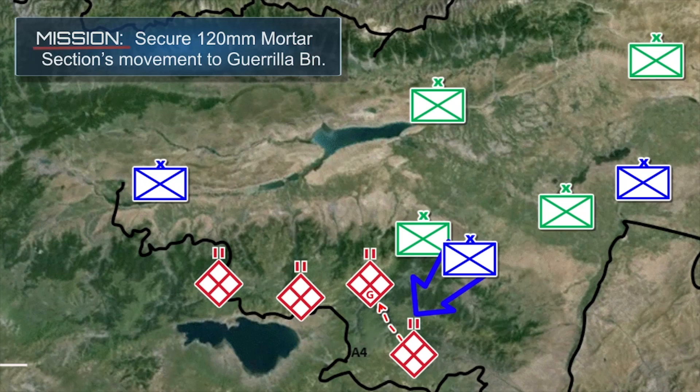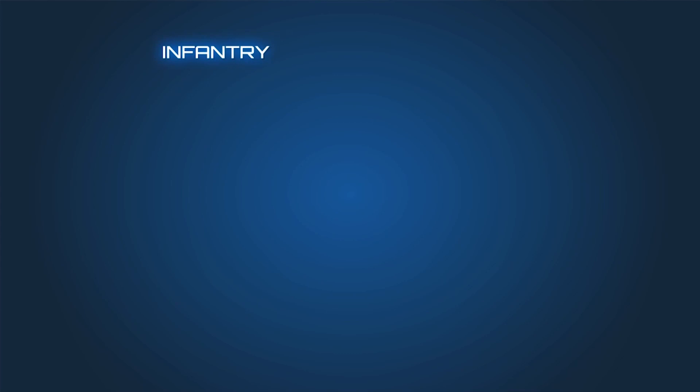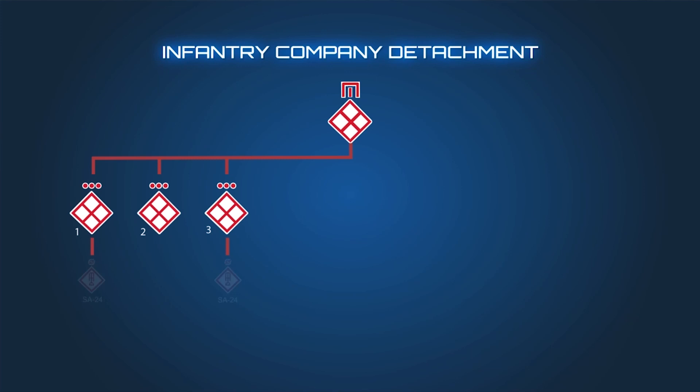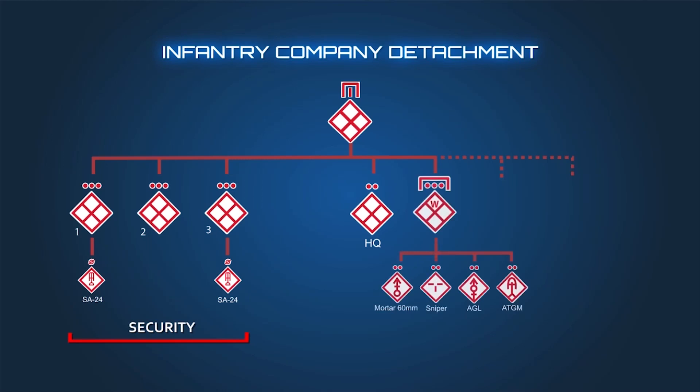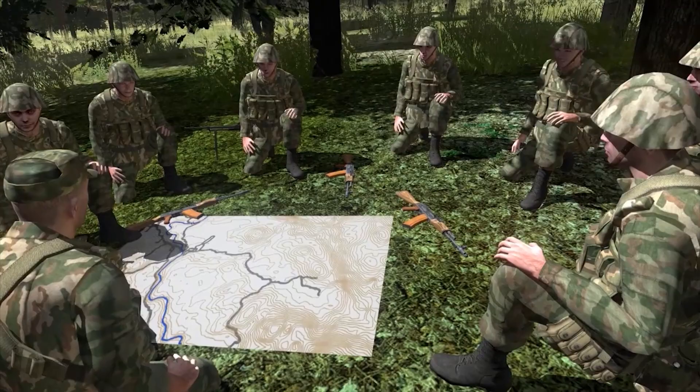Our company detachment will move along this planned route. To accomplish our mission, we will task-organize for tactical movement. The flank infantry platoons each have a dedicated SA-24 for aerial protection. The command team, the weapons platoon, the UAV, and the 120mm mortar section serve as support elements. Our dedicated infantry section serves as our reserve. An affiliated guerrilla team patrols the high ground and will provide additional reconnaissance and assist us as necessary within their capabilities.